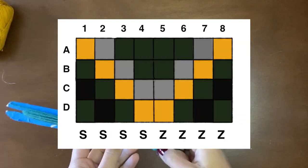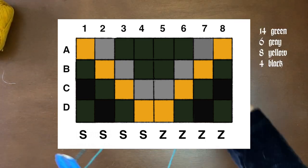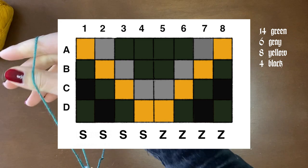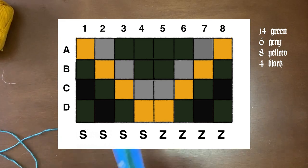Next let's take a look at the pattern. Each colored square is one thread of yarn so here we can see that we need 14 green, 6 grey, 8 yellow and 4 black threads.